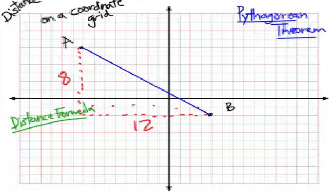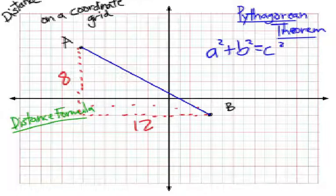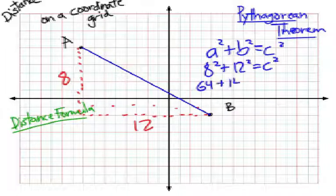I would have A squared plus B squared equals C squared. And if A and B are my legs, that would give me eight squared plus twelve squared equals C squared. Eight squared is sixty-four. Twelve squared is 144, and that gives me my blue line distance squared, the hypotenuse. When I add sixty-four and 144, I get 208.